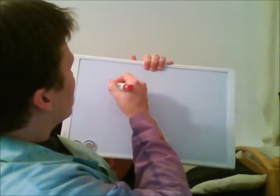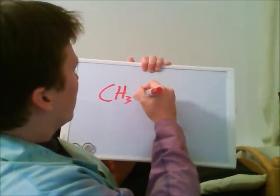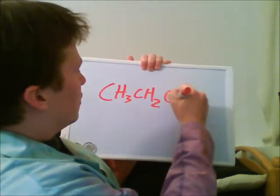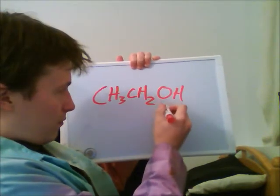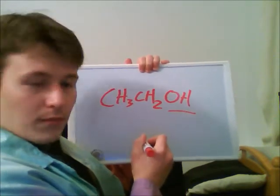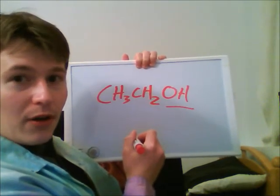Now, ethanol is a two-carbon chain with a hydroxyl group right here, which is what defines an alcohol. Ethanol is also known as grain alcohol. This is different from, say, methanol, which is called wood alcohol, and can also make you blind.